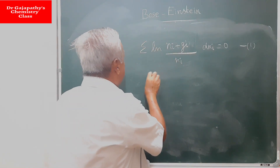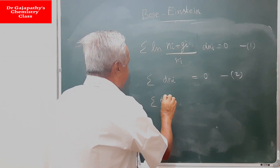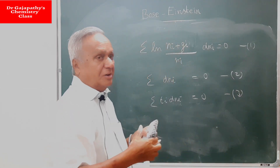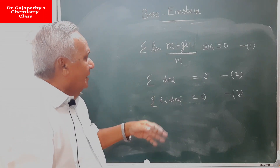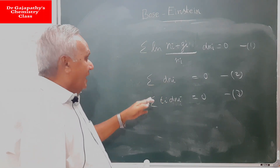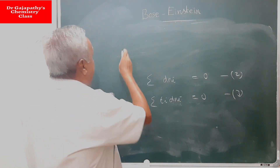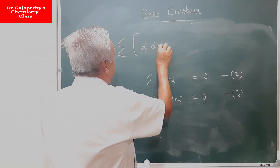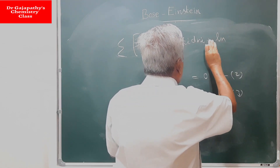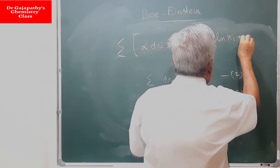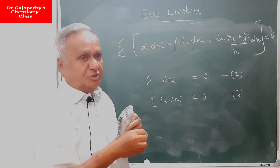Condition 2 is sigma dNi = 0, and Condition 3 is sigma Ei dNi = 0. These are the three conditions for maximum possible distribution according to Bose-Einstein. To combine them, I multiply the second equation by alpha and the third equation by beta, then add them to Condition 1, giving: sigma [ln(Ni + Gi)/Ni + alpha + beta Ei] dNi = 0.